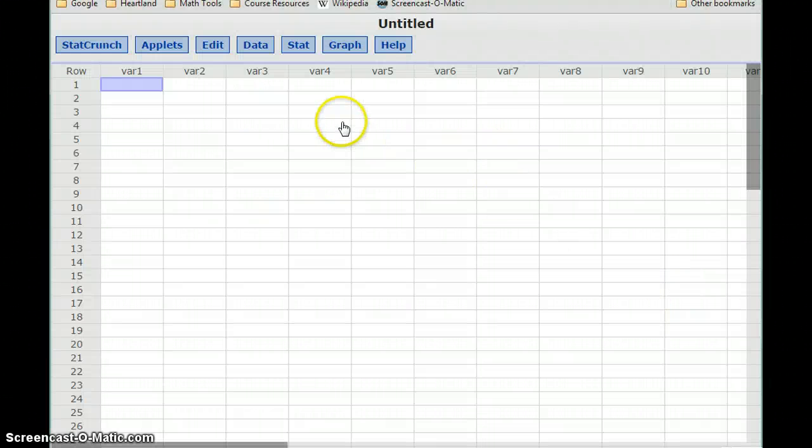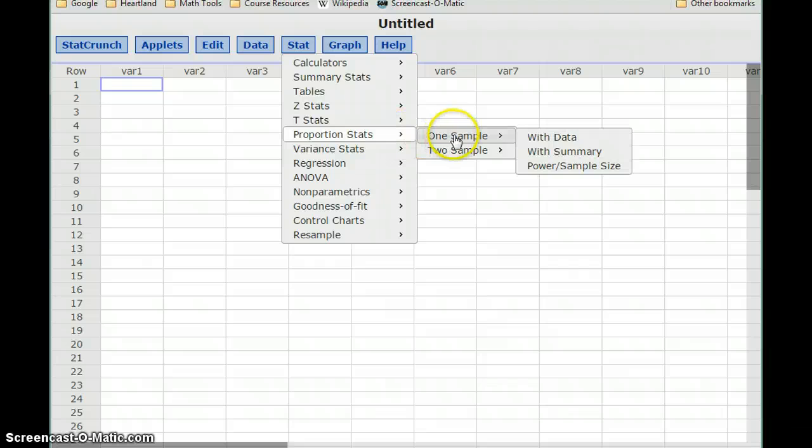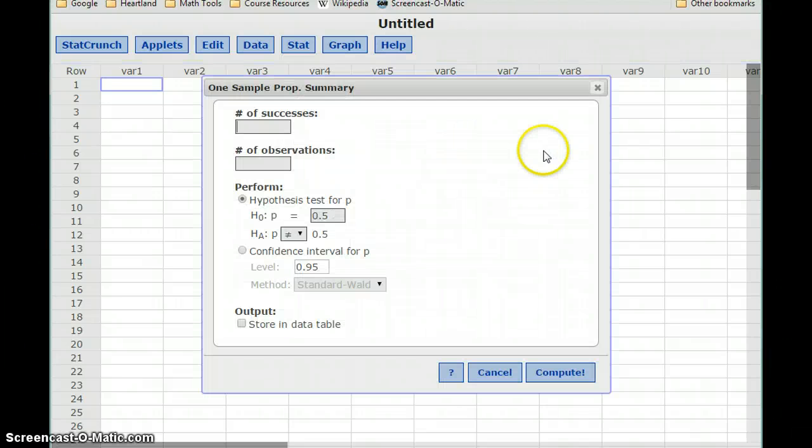So switching over to StatCrunch, we want to test a claim about a proportion. So we'll select stat, proportion stats, one sample with summary. We'll type in our number of successes and our number of observations. In this case we had 50 successes, 50 countries who won at least one gold medal out of the 85 who competed.